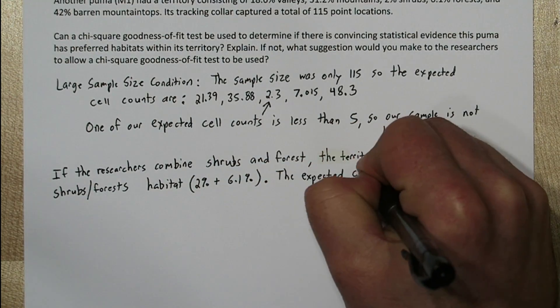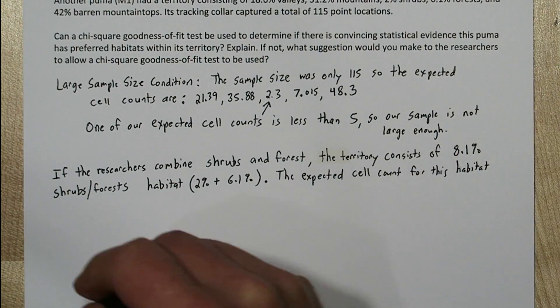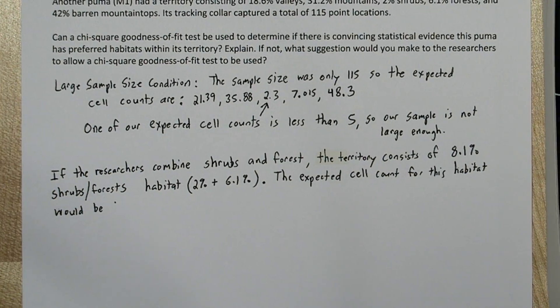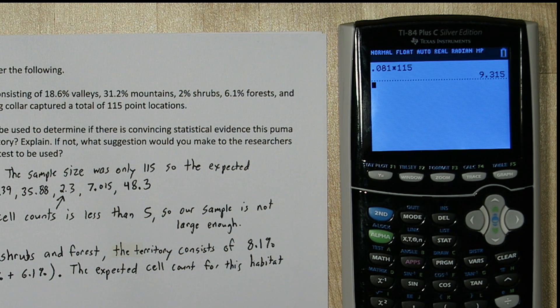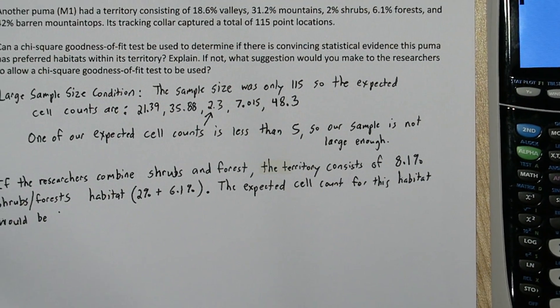Now let's see what the expected cell count for this new shrub forest habitat would be. So we're going to take 8.1% of 115, and we get an expected count of 9.315. And that's good news, it's greater than 5.